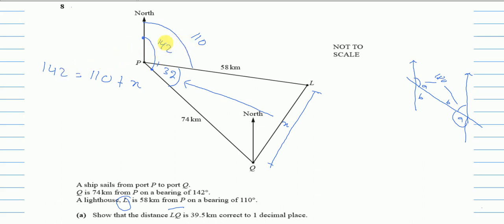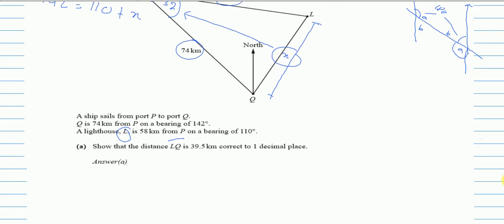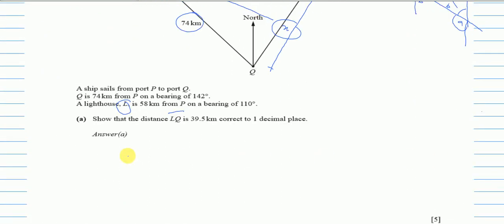Now that we know the 32° angle, let's decide which rule to use. We have two known sides and one known angle, so we use the cosine rule to find the third side x.